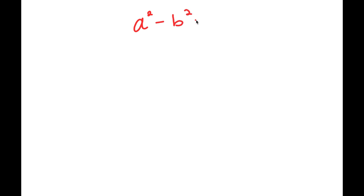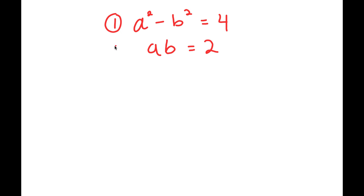In this video, I have a system of equations: a squared minus b squared is equal to 4 — equation 1 — and a times b is equal to 2 — equation 2. Using these two equations, I want to find the value of a plus b.